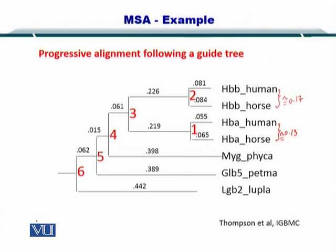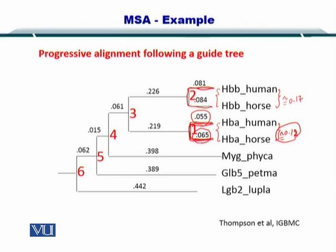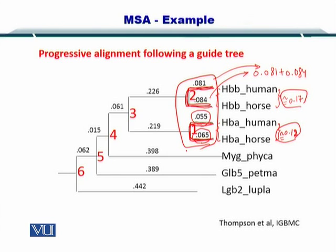You can also construct another form of tree, that is, the guide tree. Since HBB human and HBB horse are similar, while HBA human and HBA horse are similar as well, if you look at this guide tree, the distance of 0.65 plus 0.55 is almost equal to 0.13, or approximately 0.12, while HBB horse and HBB human have a distance of 0.17, which is equal to the sum of the corresponding branches approximately. Using these distances and constructing these portions within the guide tree, you can eventually construct the entire guide tree.